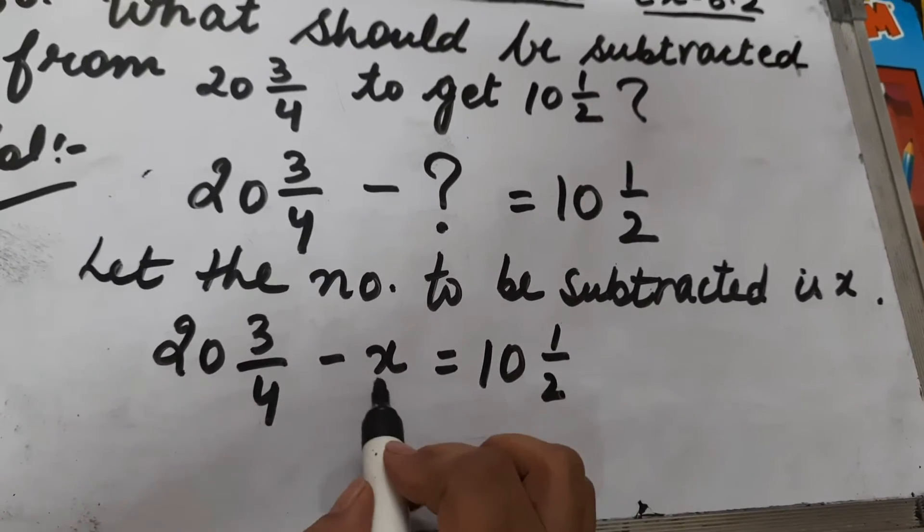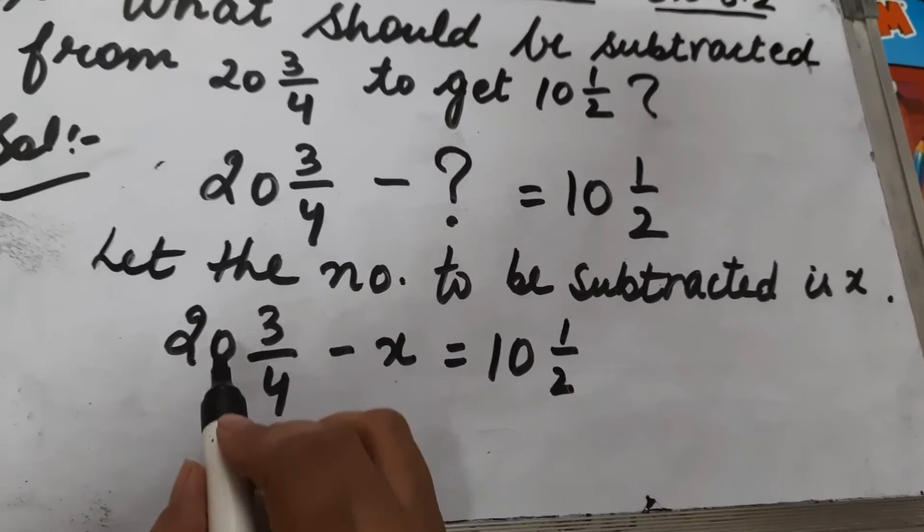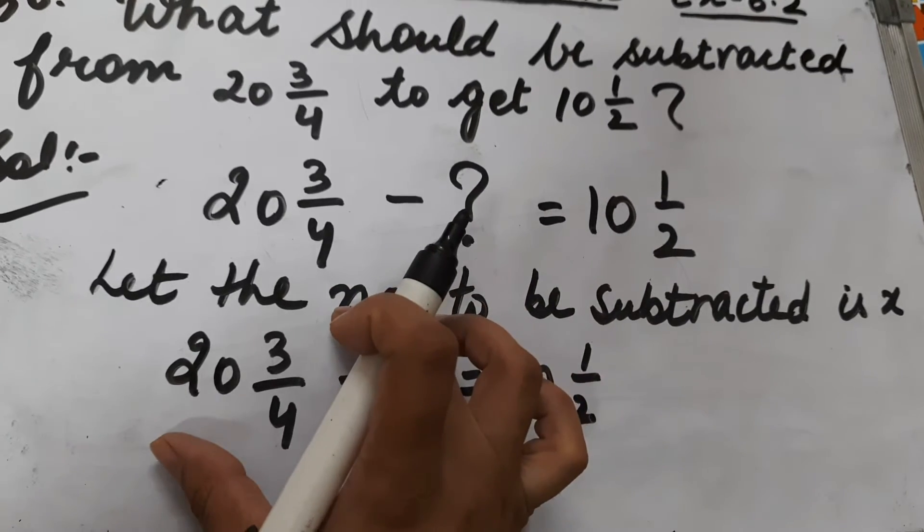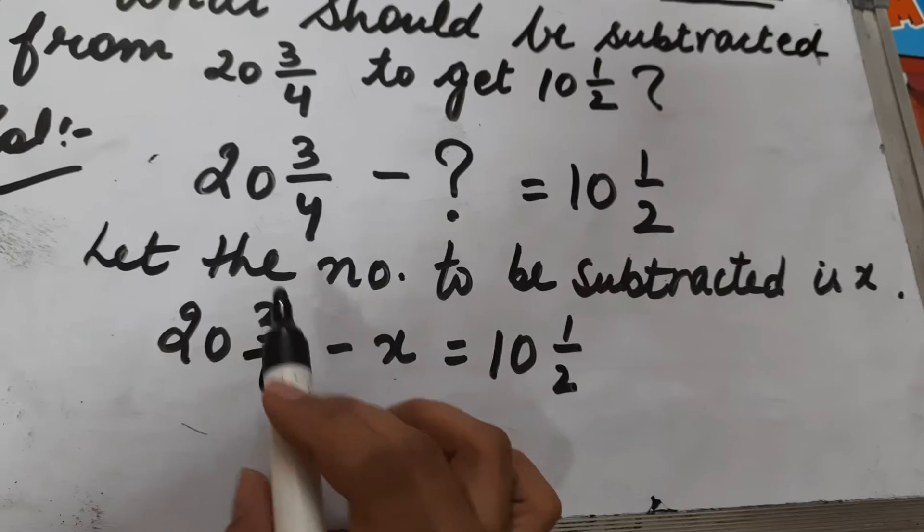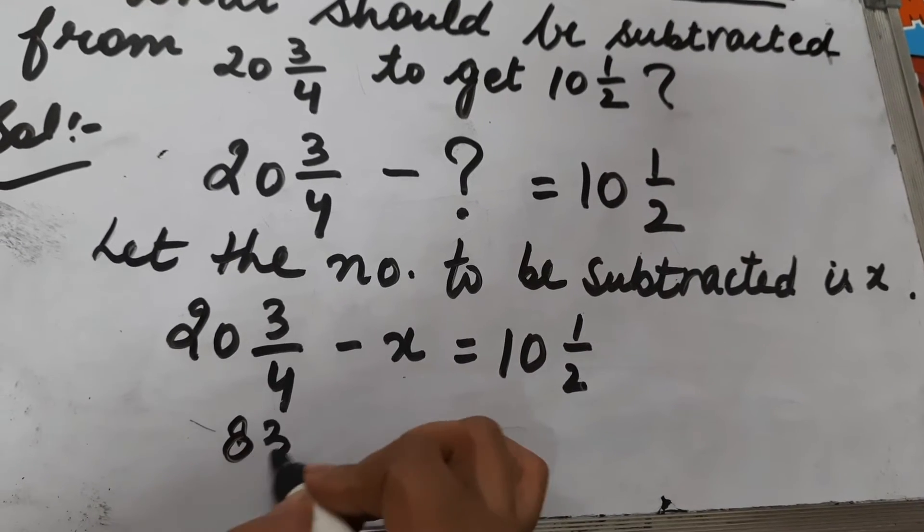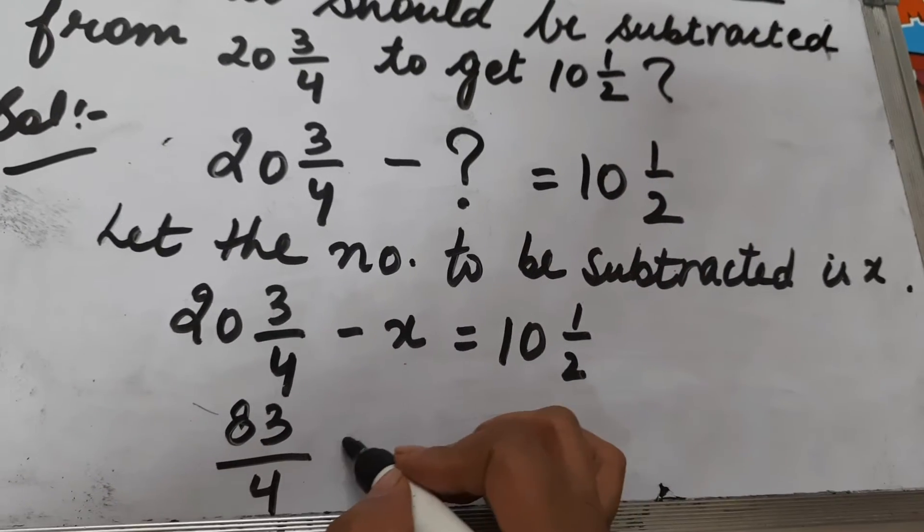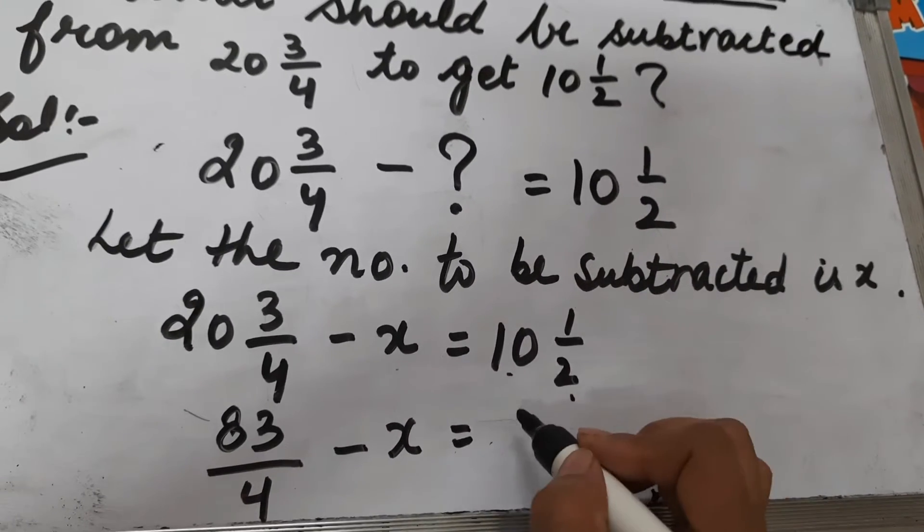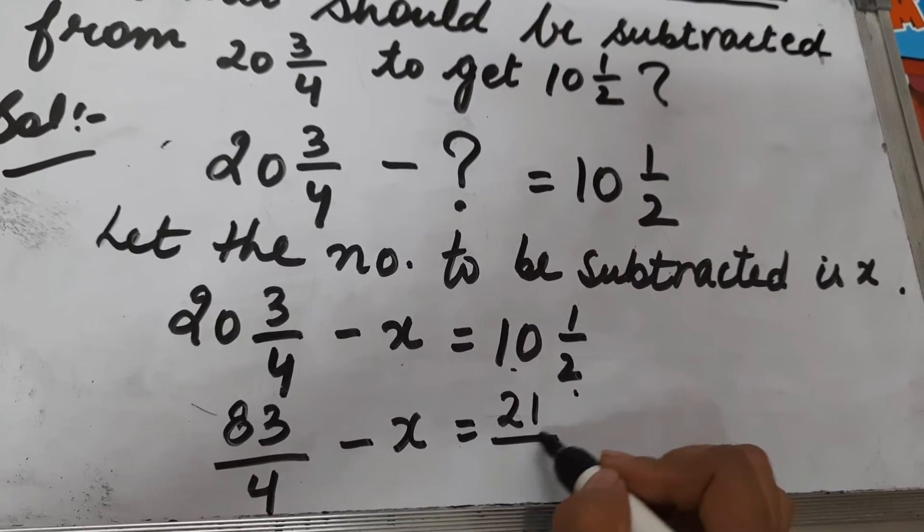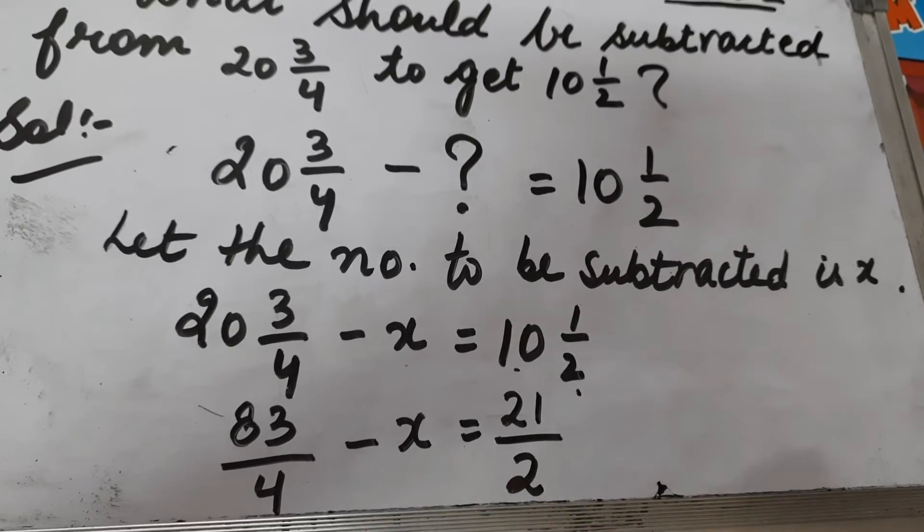First of all we will convert the mixed fraction into improper fraction. 24s are 80 and 80 plus 3 is 83, so it will be 83/4 minus x is equal to 10 times 2 are 20, 20 plus 1 is 21, so this will be 21 upon 2.